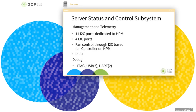Going to the management and telemetry signals: we support a total of 11 I2C buses and 4 I3C buses on the DCSEI, fully dedicated to the HPM and not shared with the SCM. We recommend that fan control be done through an I2C-based fan controller on the HPM to avoid cabling to the SCM. We also support PECI as a management bus for architectures that use it. For debug, we support several interfaces like JTAG, USB, and UART.